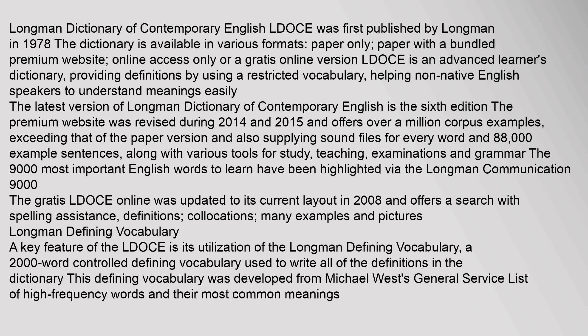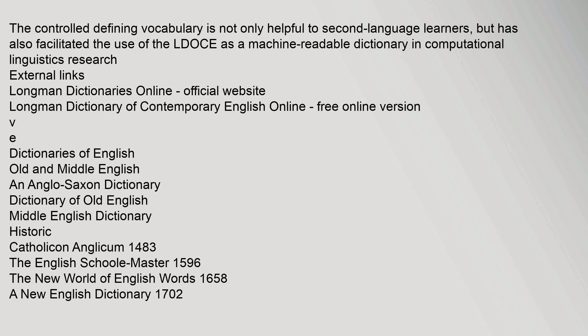Longman Defining Vocabulary: A key feature of the LDOCE is its utilization of the Longman defining vocabulary, a 2,000-word controlled defining vocabulary used to write all of the definitions in the dictionary. This defining vocabulary was developed from Michael West's general service list of high-frequency words and their most common meanings. The controlled defining vocabulary is not only helpful to second language learners, but has also facilitated the use of the LDOCE as a machine-readable dictionary in computational linguistics research.